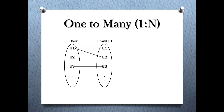The next type is one to many relationship. We can define it as: when every entity of the first entity set can relate to any number of entities of the second entity set, and any number of entities of the second entity set can relate to at most one entity of the first entity set, then we can say the relationship is a one to many relationship.